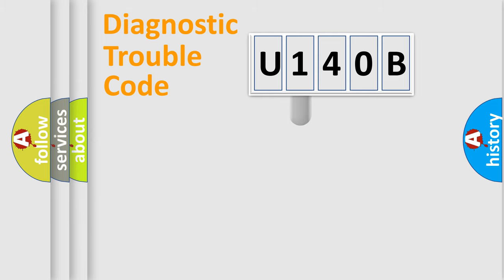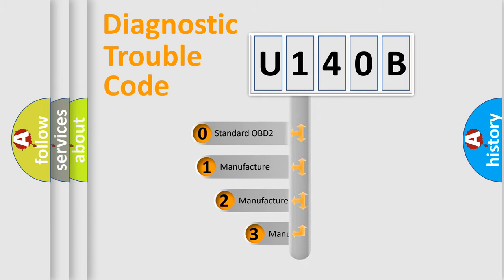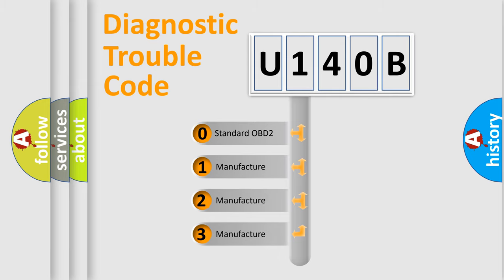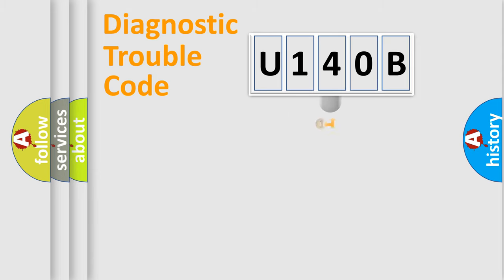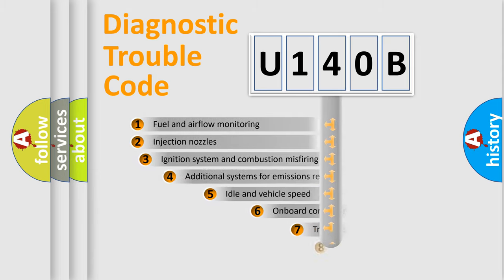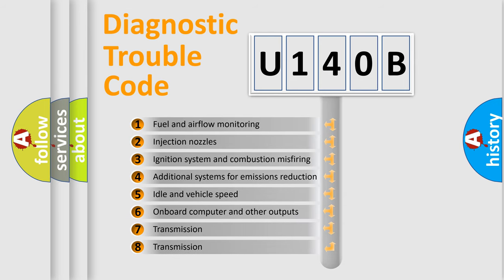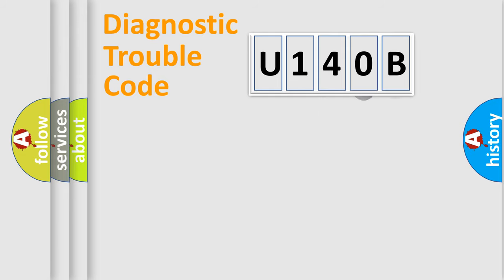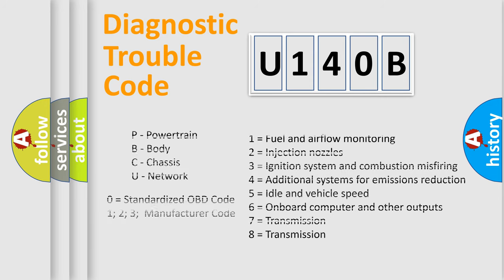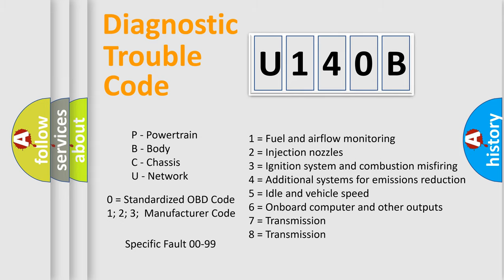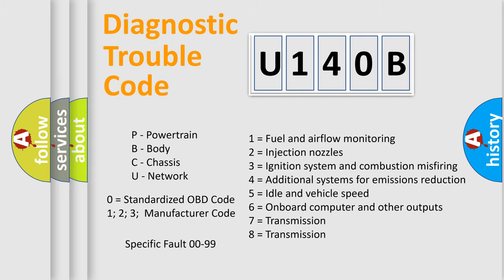This distribution is defined in the first character of the code. If the second character is expressed as zero, it is a standardized error. In the case of numbers 1, 2, or 3, it is a more specific expression of a car-specific error. The third character specifies a subset of errors. The division shown is valid only for the standardized DTC code, and only the last two characters define the specific fault of the group.